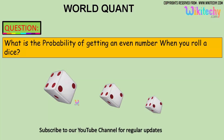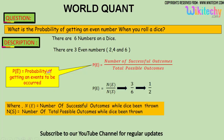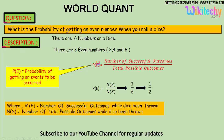The answer is: there are six numbers on a dice and we got three even numbers — two, four, and six. Here is the formula: the probability of getting an event is the number of successful outcomes divided by the total possible outcomes.